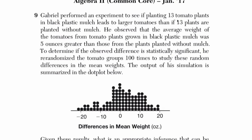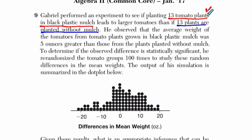Gabriel performed an experiment to see if planting 13 tomato plants in black plastic mulch leads to larger tomatoes. You start reading these problems and probably what you should start doing is underlining things or marking things or writing things, because there's so much happening that you probably don't care about that you have to force your brain to remember it as you go along. For example, it says 13 tomato plants in black plastic mulch is leading to larger tomatoes than if 13 plants are planted without. I don't see them labeled here, so I'm going to call this group A and I'll call this group B.